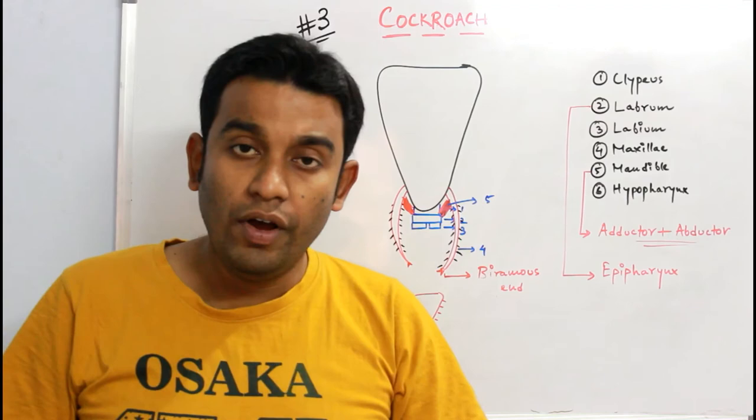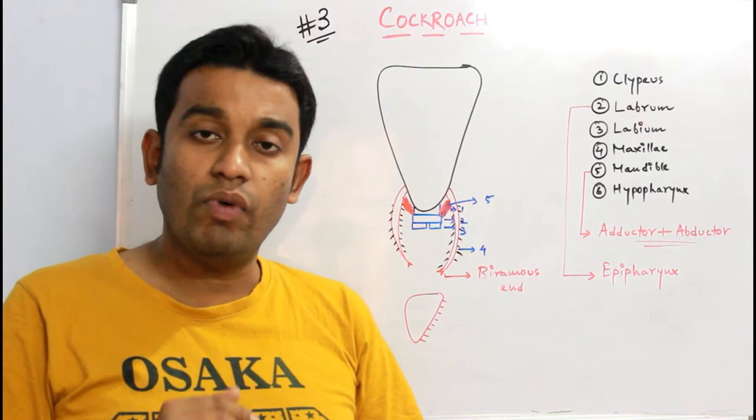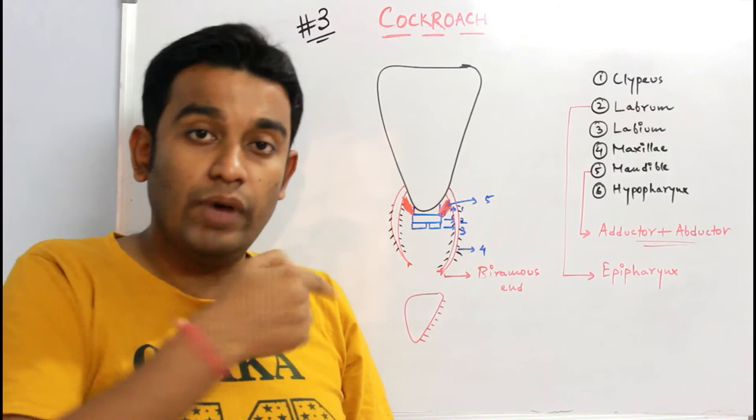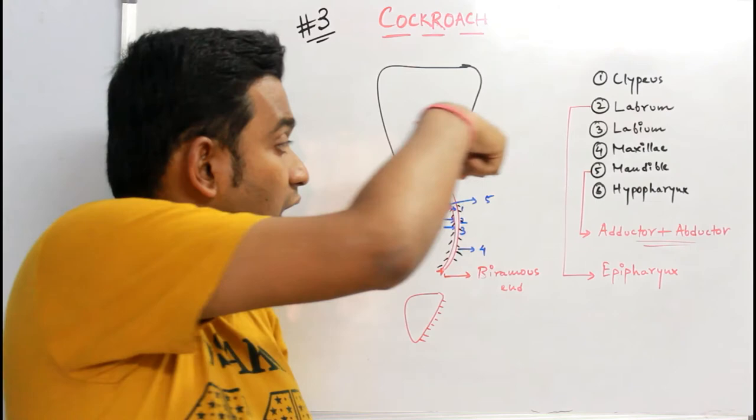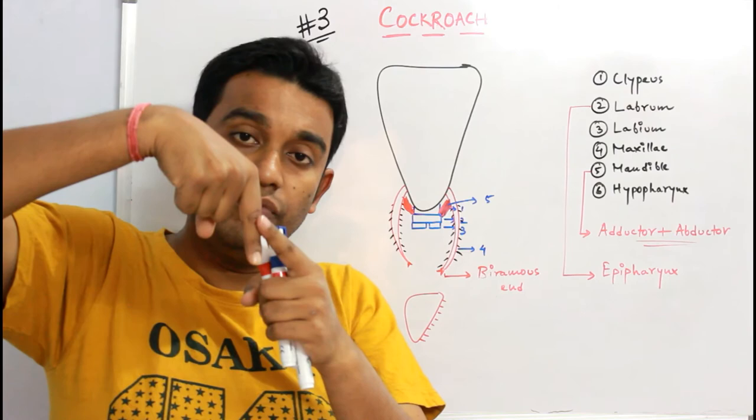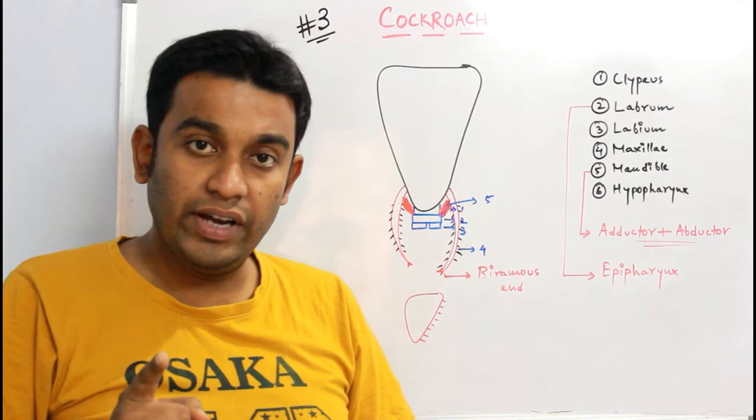Now these hypopharynx perform two functions, two important functions. Number one, whatever food you have taken inside with the help of this bioremus and you have put it inside, that food will be taken down. So it helps in the swallowing. Along with that, to this hypopharynx the salivary duct will open up, as a result of which from this hypopharynx the saliva will ooze out into the buccal cavity.